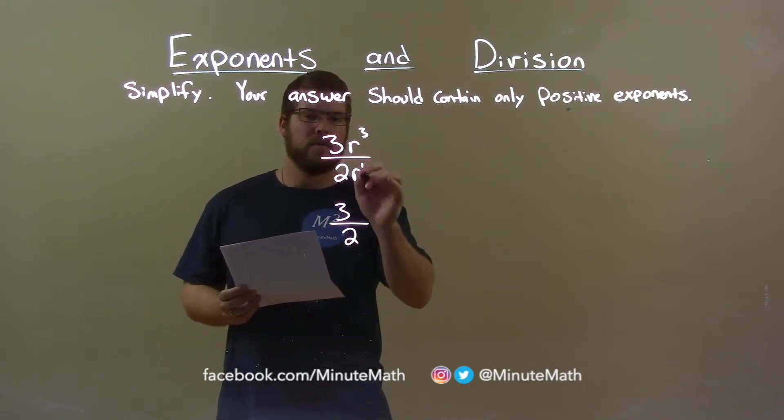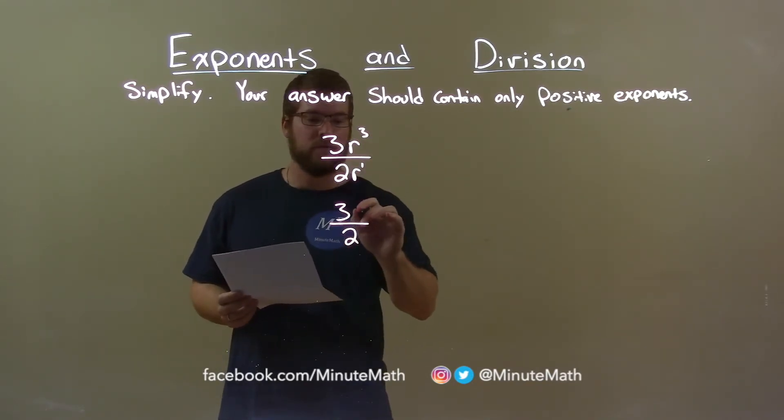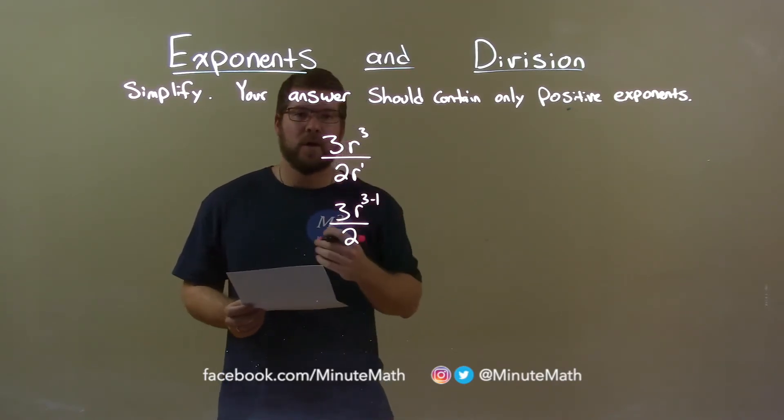Now, when we divide for the same base, we subtract the exponents. So, we have r to the 3 minus 1 power, and 3 minus 1 is 2.